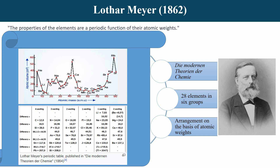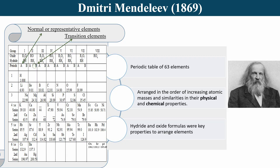In the early 1860s, Lothar Meyer independently developed his periodic system in which he arranged the elements in order of increasing atomic volumes. He observed that elements with similar chemical properties occurred at regular intervals, demonstrating the periodicity in the properties of elements. For example, sodium, potassium, and rubidium occupy similar positions, meaning they are placed in the same group according to Lothar Meyer.